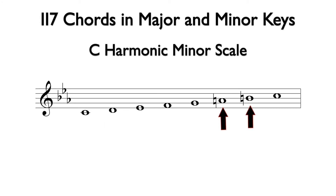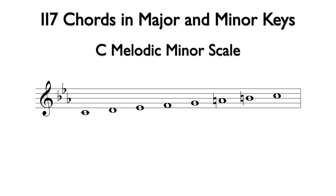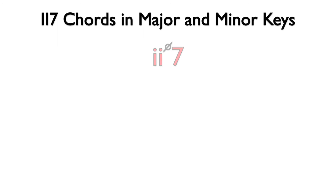If we raise both the sixth and seventh degrees of the natural minor scale, we have the ascending version of melodic minor. The raised sixth degree of the scale gives us A natural. This note changes the fifth of the D half-diminished seventh chord, making it D minor seventh. While this is a possible chord in a minor key, the two half-diminished seventh is by far the most common two-seventh chord in minor.